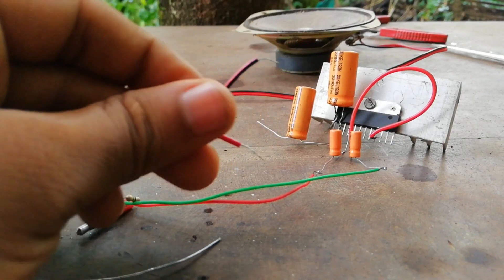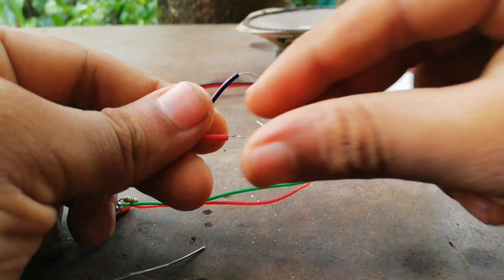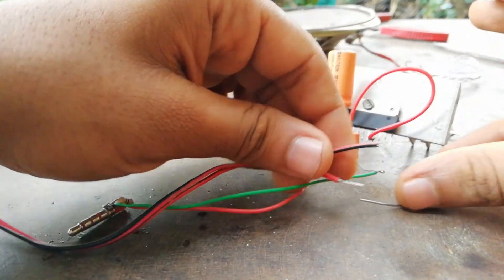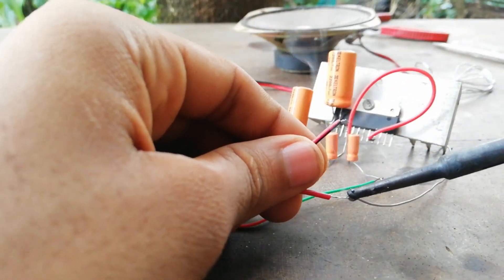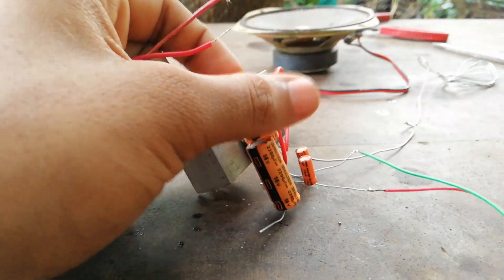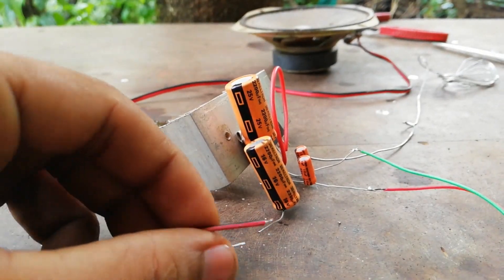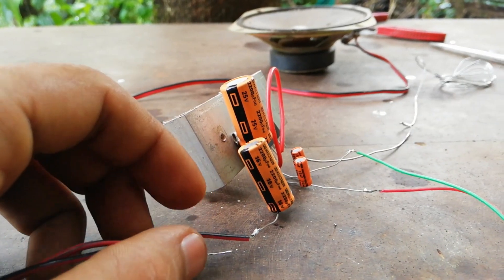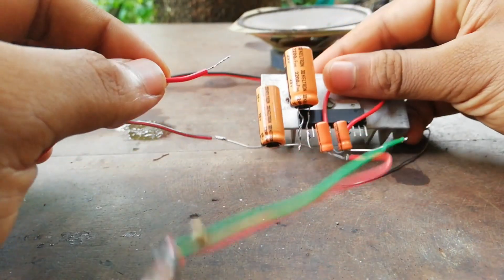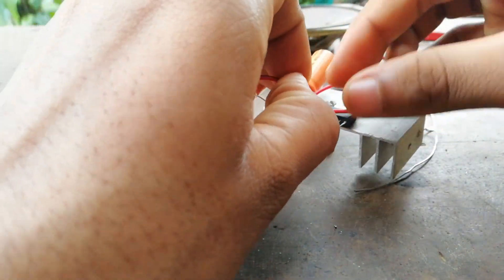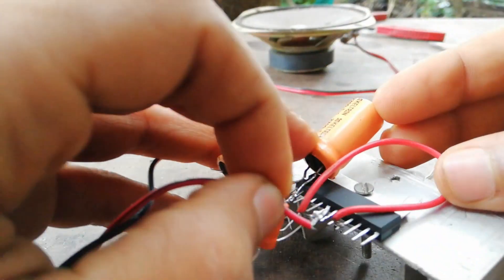We need to solder the speaker and the LED. We need to solder the wire to the board and the ground.